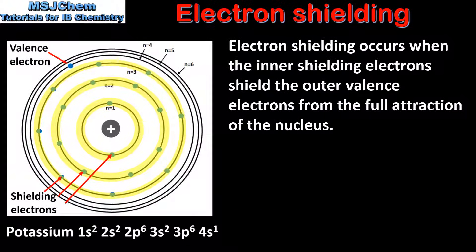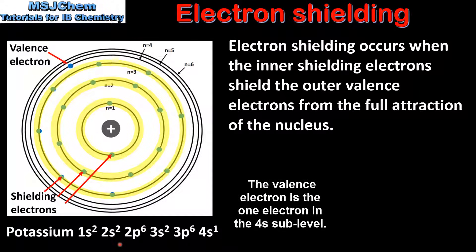Electron shielding occurs when the inner shielding electrons shield the outer valence electrons from the full attraction of the nucleus. On the left we have a diagram of an atom of potassium. Its electron configuration is 1s2, 2s2, 2p6, 3s2, 3p6, 4s1. From this electron configuration we can see that potassium has 4 occupied main energy levels with 1 valence electron.